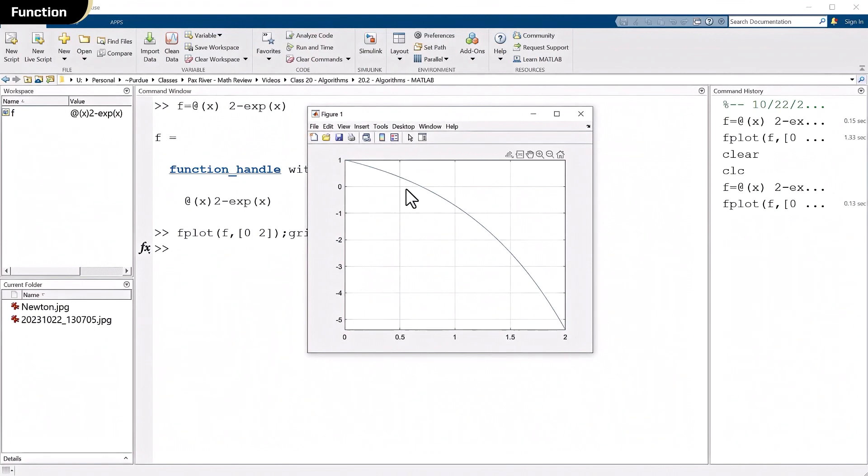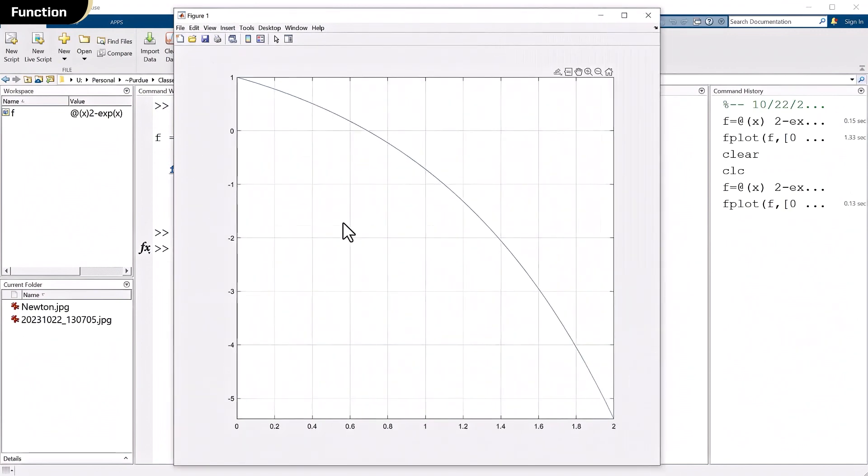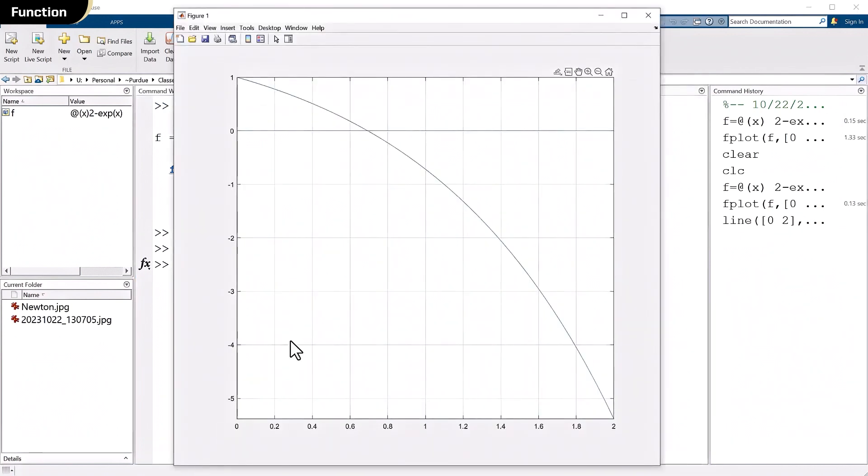And there we go. And you can see that the horizontal axis, let me make that a little bigger for you. The horizontal axis is right there. Maybe let's add a line there. We can say line goes from 0 to 2 in the x and 0, 0 in y.